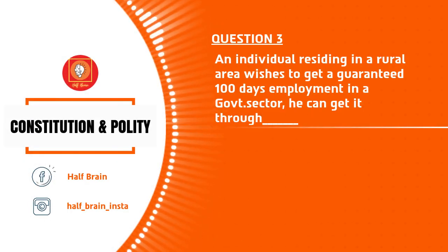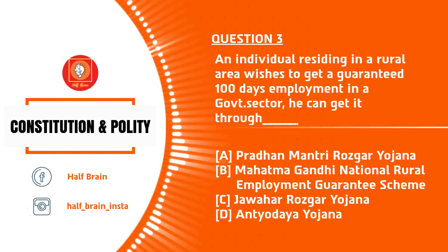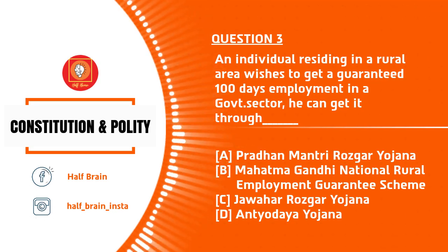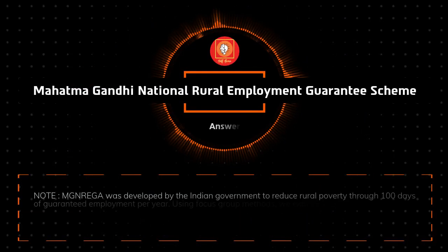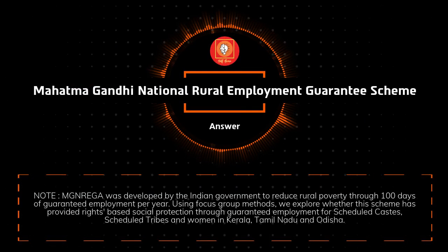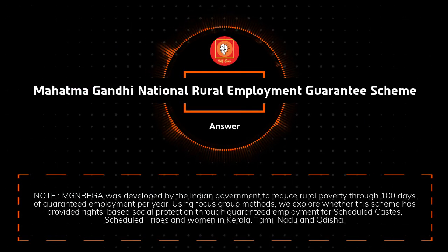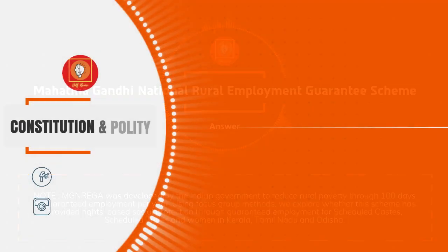Question number 3: An individual residing in a rural area wishes to get a guaranteed 100 days employment in the government sector. The answer is MGNREGA — Mahatma Gandhi National Rural Employment Guarantee Scheme.